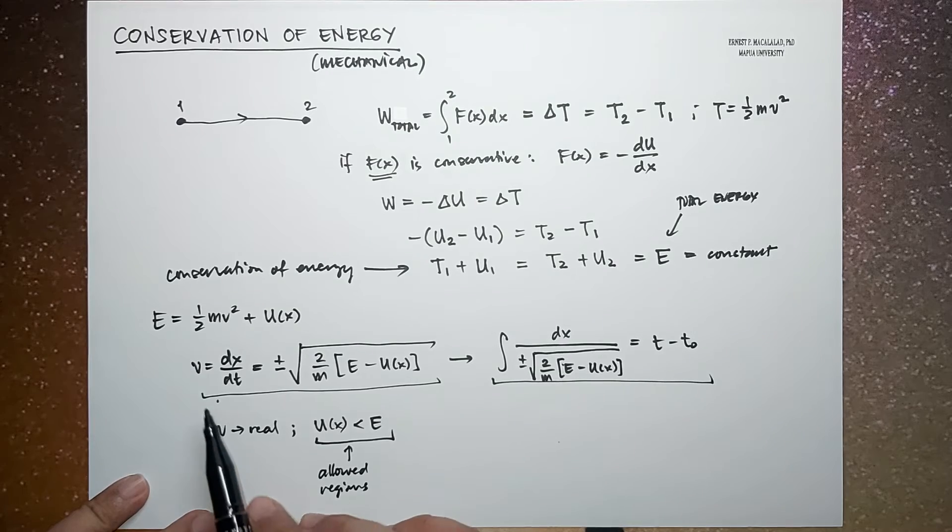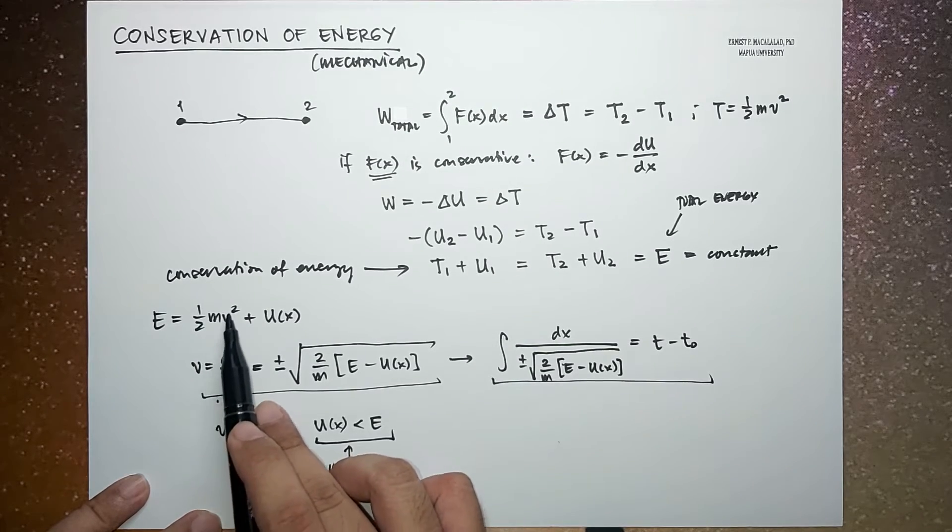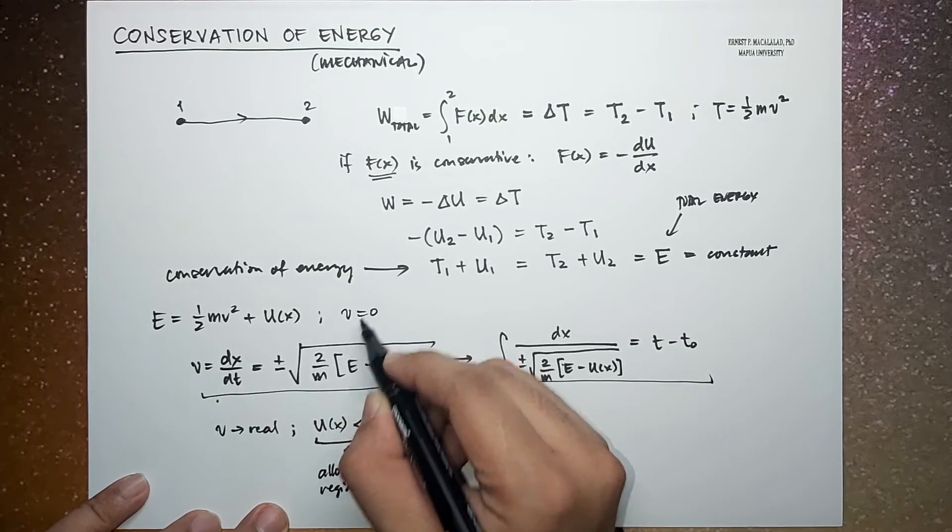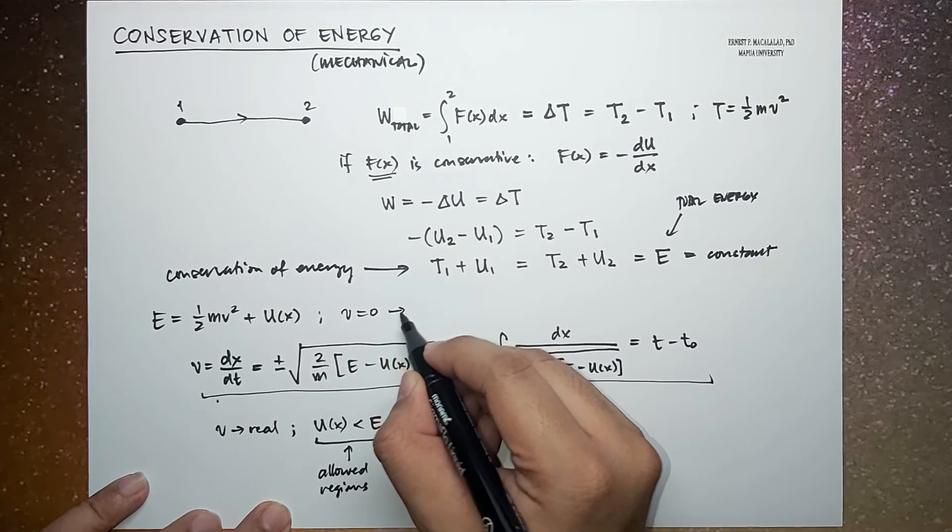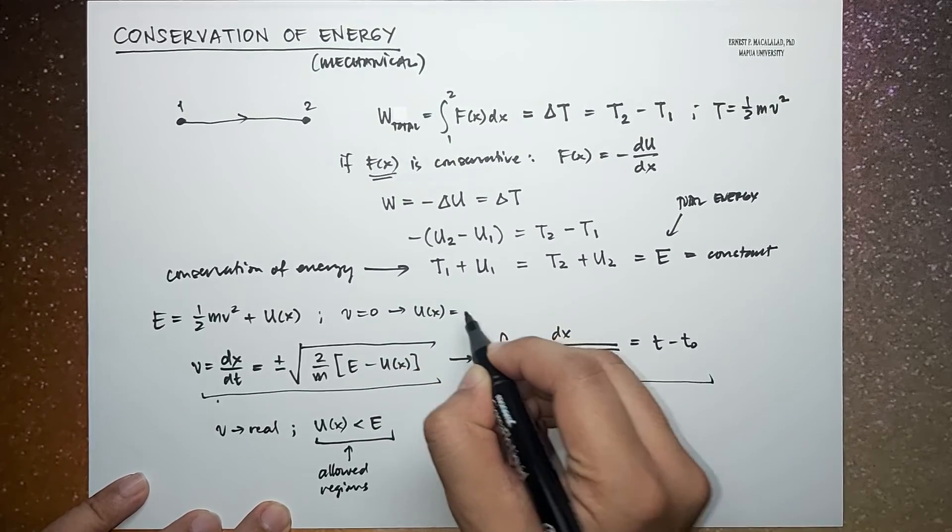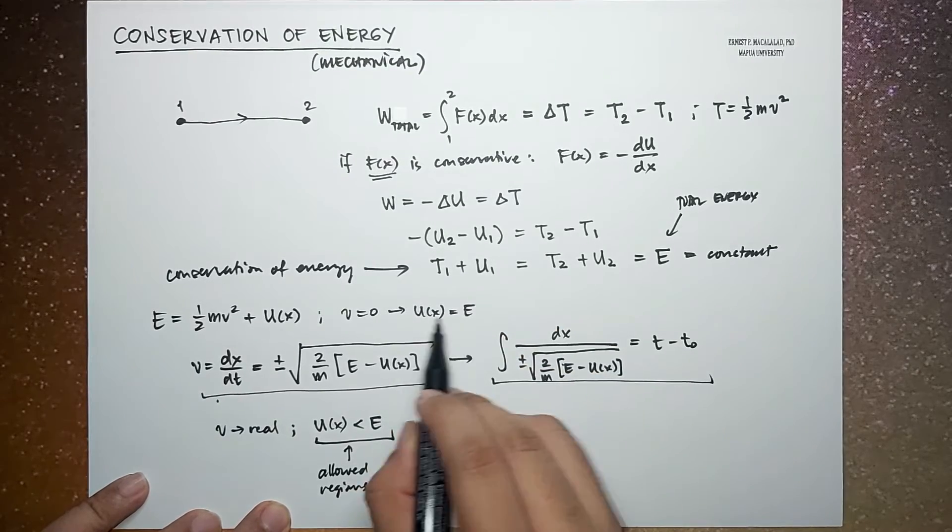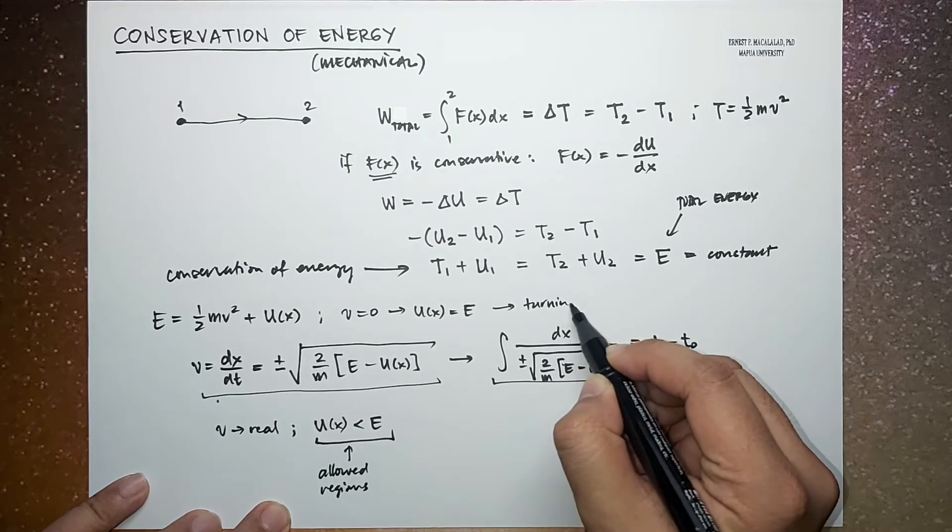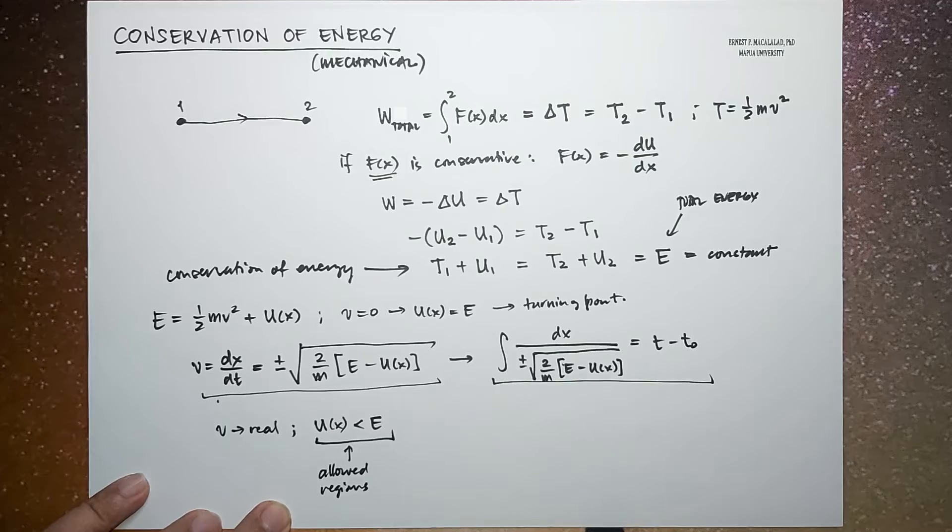Also, when the particle stops, let's say V is equal to 0, the potential energy will approach the total energy. We call this point the turning point.